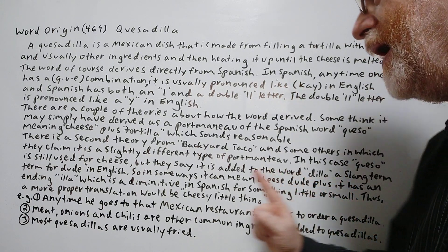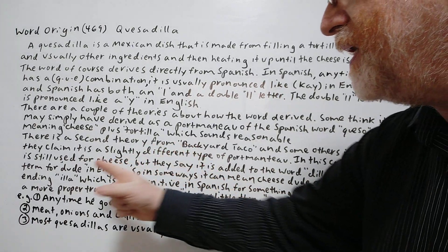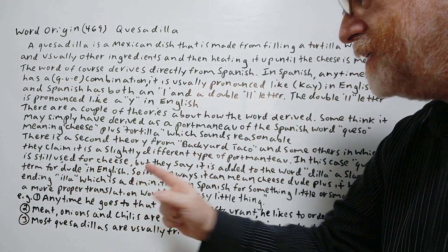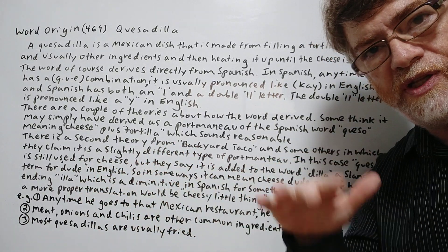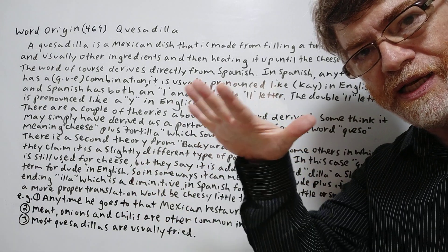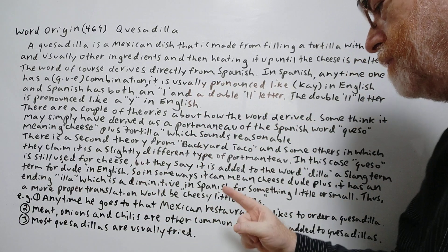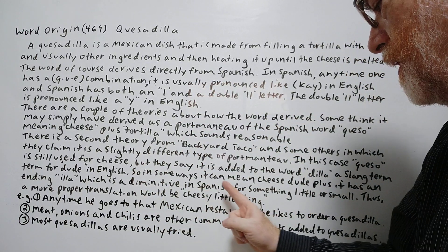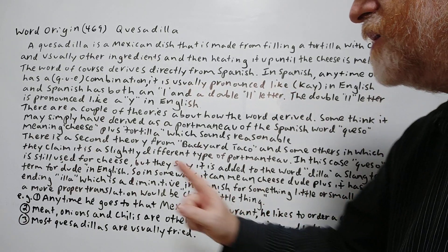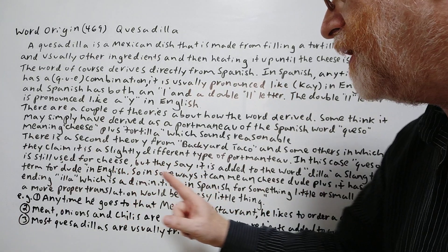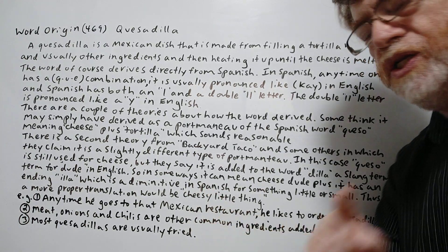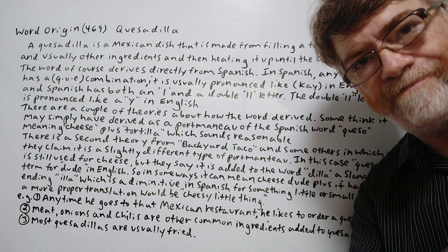Plus it has an ending of -ia, which is a diminutive in Spanish — like we have some diminutives that make everything small or little. In Spanish, for something little or small. Thus a more proper translation would be cheesy little thing.